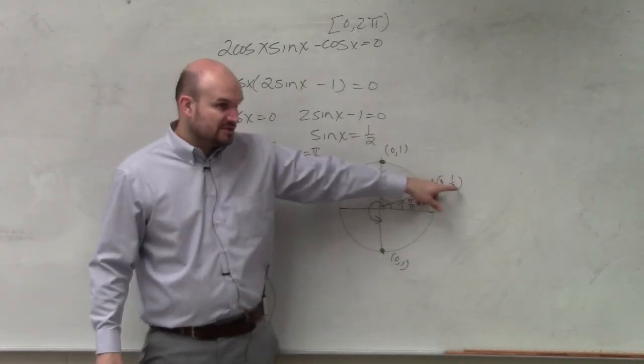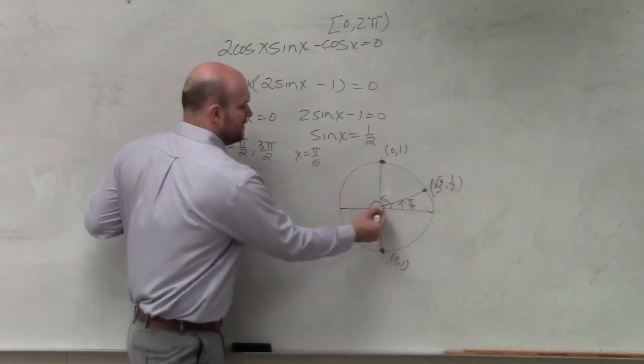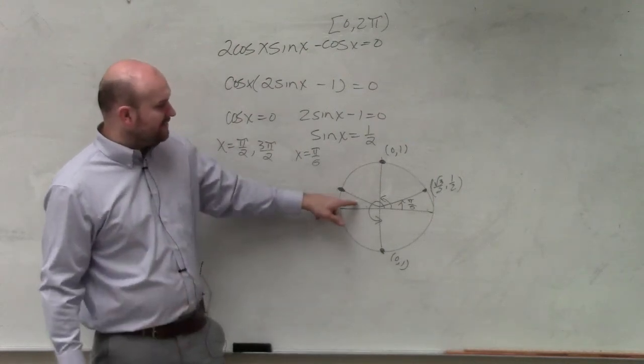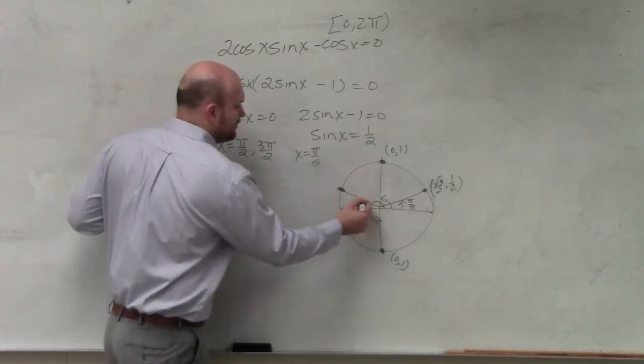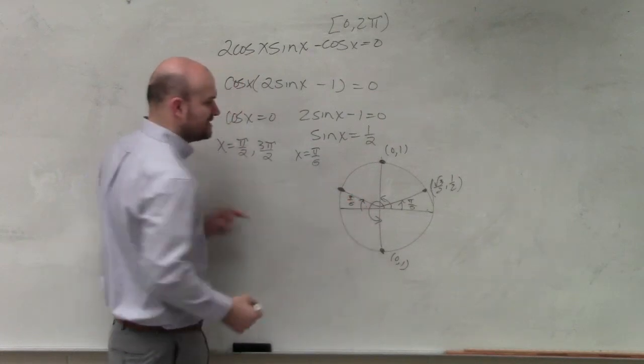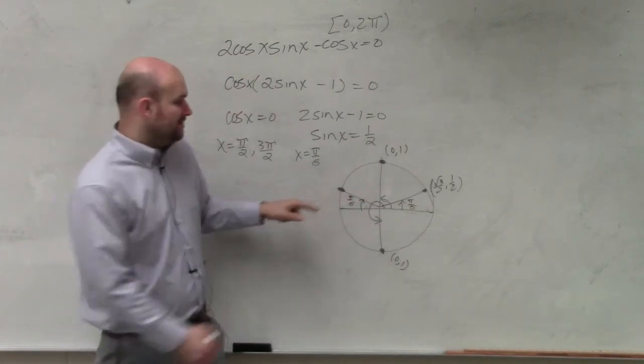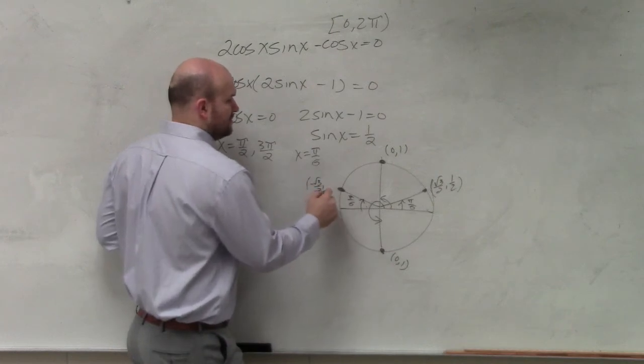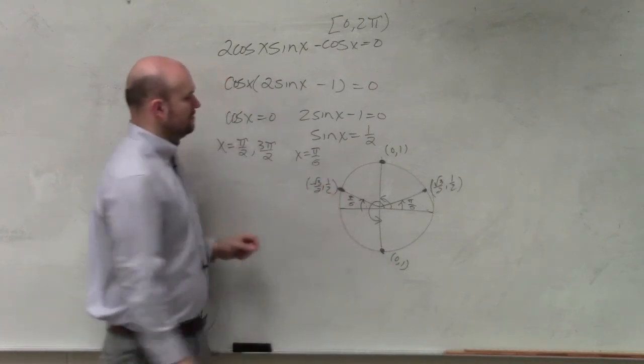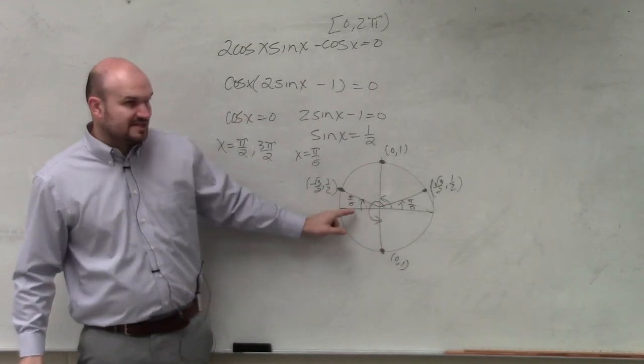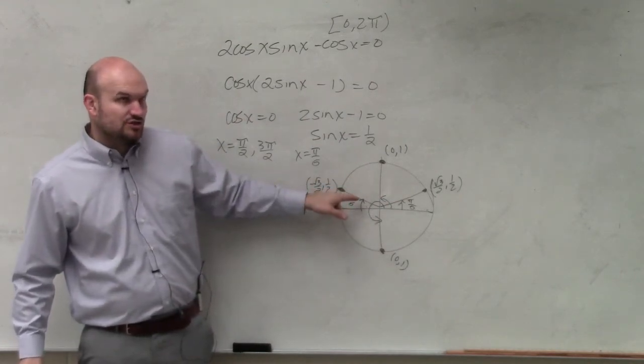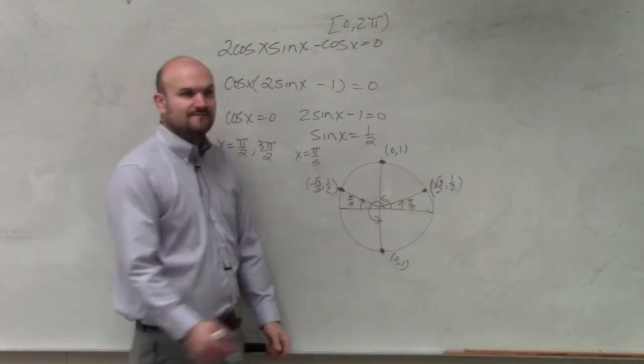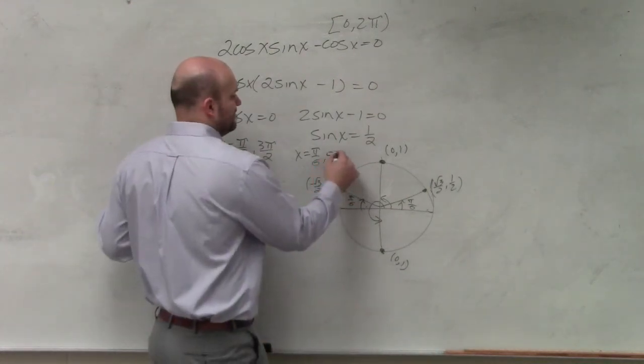But for sine, which is y coordinate to be positive, that means it has to be in the first or the second quadrant. So I need to figure out what this angle is, because I know the reference angle is also pi over 6. So it has the same coordinates. But I just got to figure out what that angle is, which, if halfway around a circle is 6 pi over 6, and you're pi over 6 short, therefore, this angle is going to be 5 pi over 6.